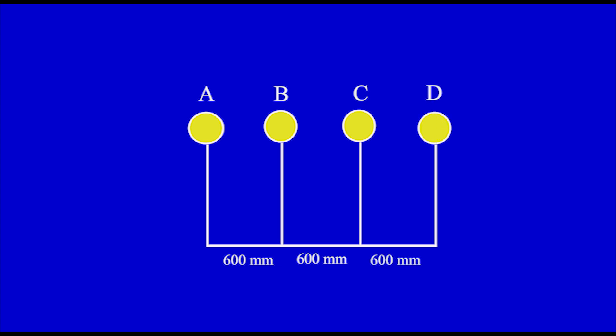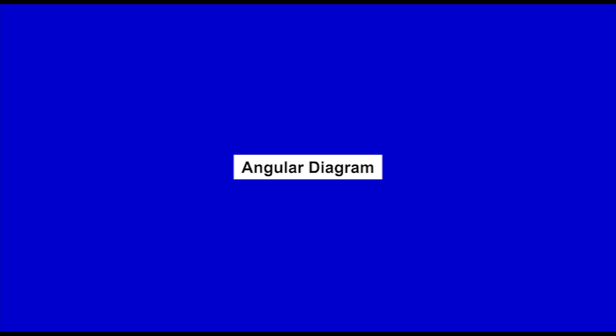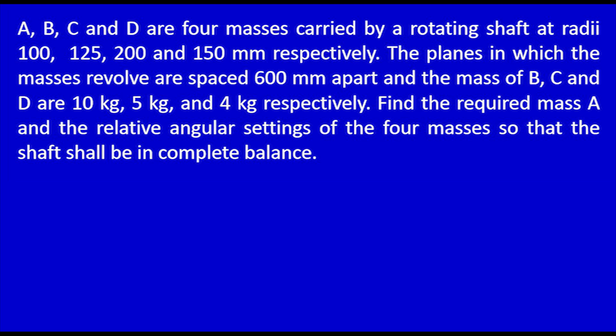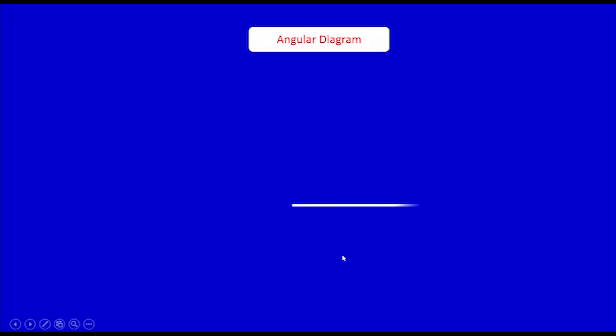From this diagram, I can see that the order of the planes is A, B, C, D. Next, I would like to create an angular diagram. Unfortunately, the problem statement does not provide any angle values between planes, so I am unable to draw the angular diagram. Instead, I will take plane B as a horizontal reference plane, since plane A has an unknown value and cannot be used as reference.